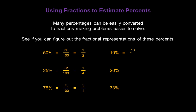10% is 10 over 100, which reduces to one tenth. 20% is 20 out of 100, which reduces to one fifth. And finally, 33% is 33 out of 100, and that's very close to one third.